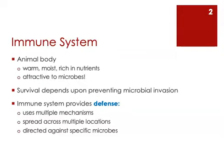As we're going to talk about today, the immune system uses multiple mechanisms to defend the body from invasion and infection by microbes. Those mechanisms are spread across multiple locations within the body, and different mechanisms are combined and directed against different types of microbes. The body will combine certain mechanisms to fight bacterial pathogens, and other mechanisms to fight viral pathogens.